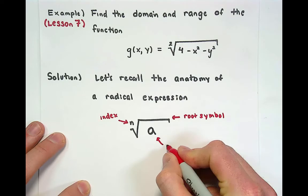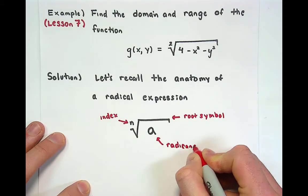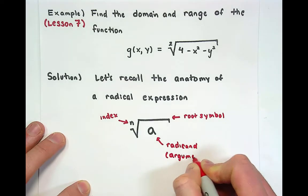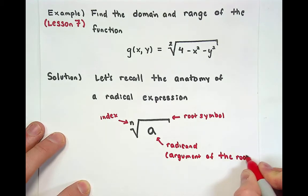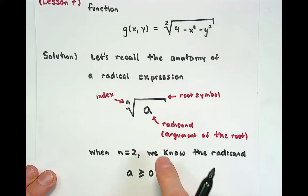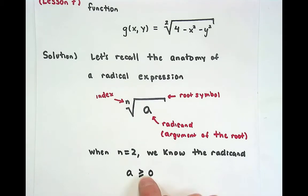The thing inside we call the radicand. You could also call this the argument of the root or the radical. When we look at an index of 2, we know that the radicand a must be bigger than or equal to zero, because there's no such thing as a square root of a negative number.